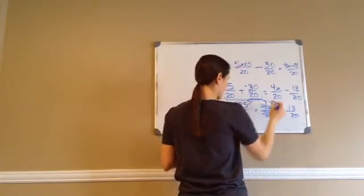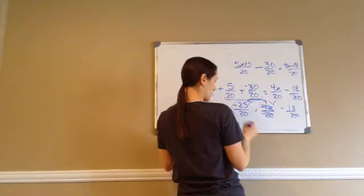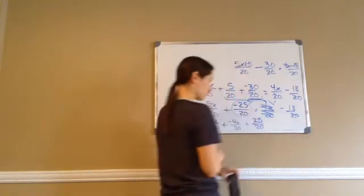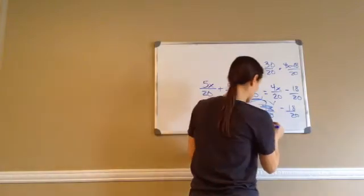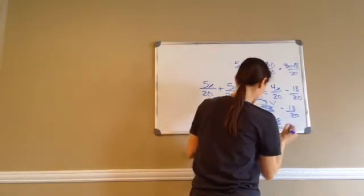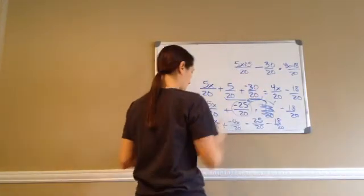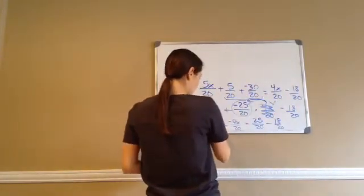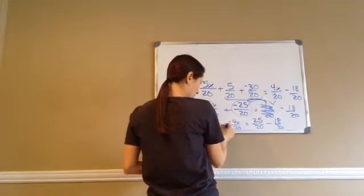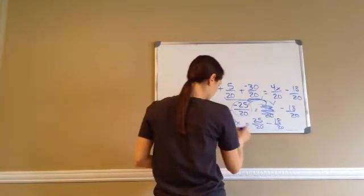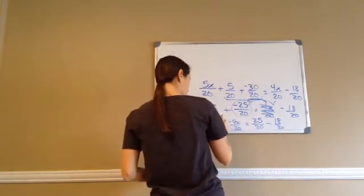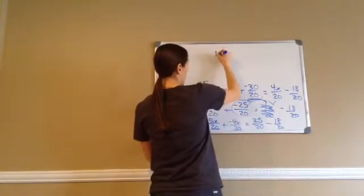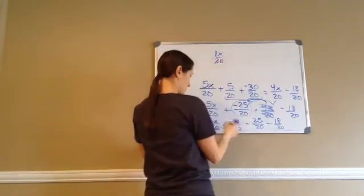And taking this negative 25 over 20 across the equal sign, it's going to become a positive 25 over 20. Then I have a minus 18 over 20. Now: 5x plus a negative 4x makes 1x. So 1x over 20. And then 25 plus negative 18 — that's 7 over 20.